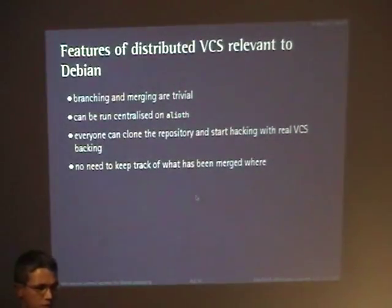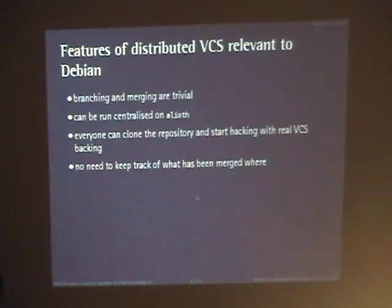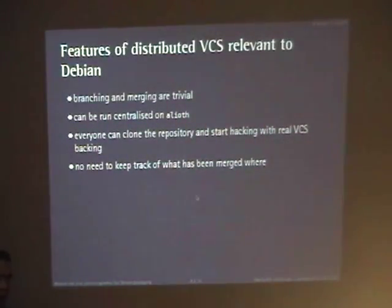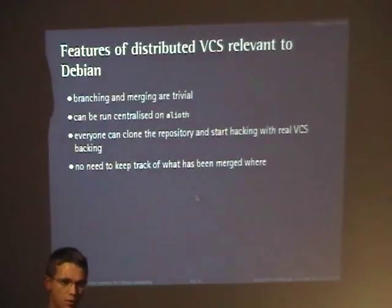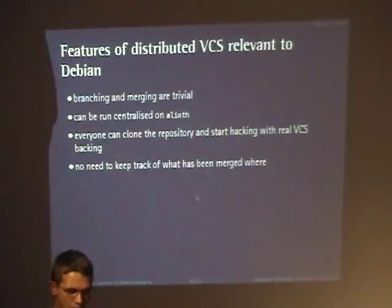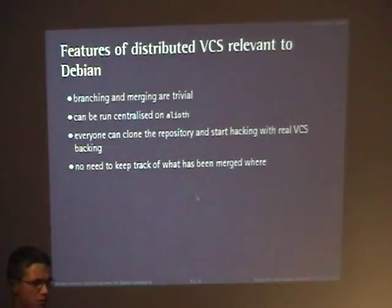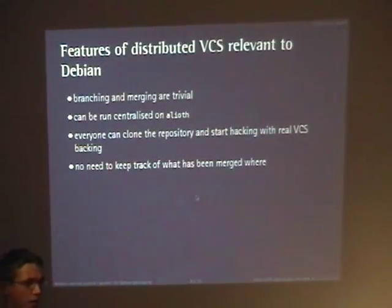So what are the features of version control systems that are actually relevant to Debian? Manoj and I sat down yesterday and isolated these features. We think that branching and merging are trivial with the distributed version control systems — so easy that you should just use them. The distributed version control systems can be centralized on Alioth, and if they are, they are really accessible to contributors. A contributor who wants to start hacking at 2am can just check out the entire repository without any account and start hacking the entire weekend with a full-featured version control system, and in the end has something to present which may get them an account.